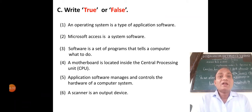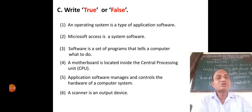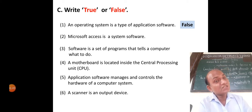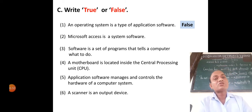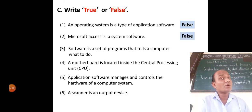True or false. First statement — an operating system is a type of application software. This statement is false, because an operating system is a type of system software. Second statement — Microsoft Excel is a system software. This statement is false; Microsoft Excel is an application software.